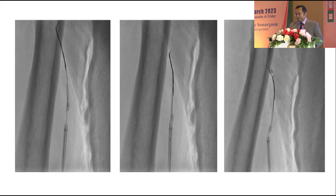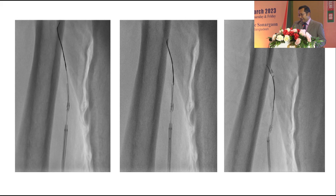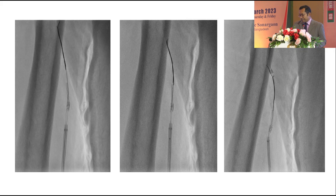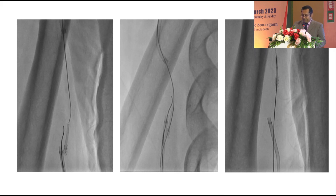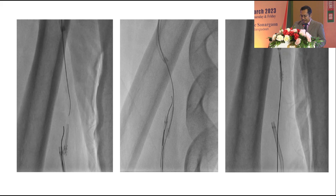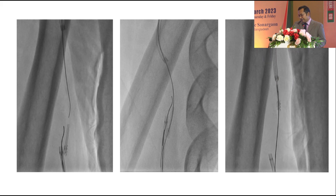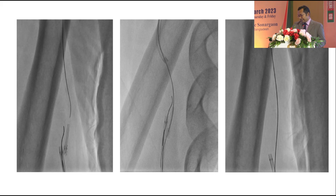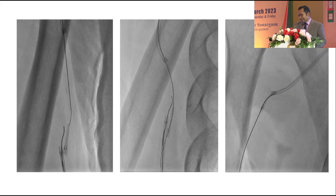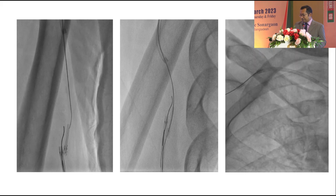We had a large sheath in the right femoral route, and through that route we entered another catheter and took a CTO wire so that we could enter from the opposite direction of the stent and rewire it. Ultimately, we succeeded. Very meticulously and cautiously, we rewired the stent. We then took another 1.5 balloon, pulled it into the femoral catheter, and ultimately dragged the stent to the femoral route through the larger sheath.